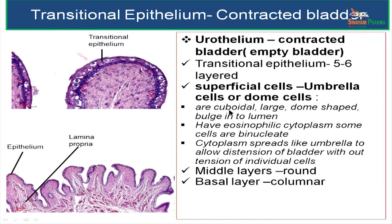How do these cells look? They are cuboidal, large, dome-shaped, and they bulge into the lumen. The cytoplasm is eosinophilic. Sometimes you might see some cells with 2 nuclei — it is called binucleate.